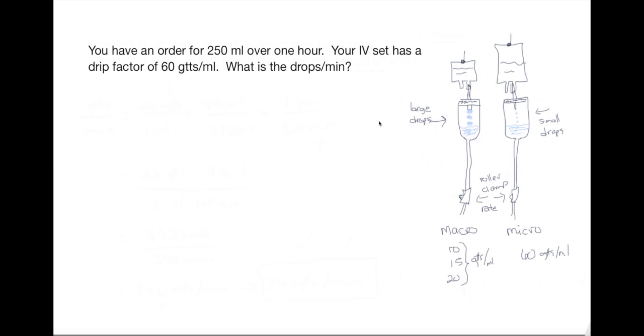Okay, here we have another order: 250 mLs over one hour, and I have an IV set that has 60 drops per mL, and I'm looking for drops per minute. So as always, what is the question asking me to find? And I'm going to start with that: drops per minute.